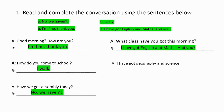I have got geography and science. Since we completed the conversation, let us read. Good morning, good morning. How are you? I'm fine, thank you. How do you come to school? I walked. Have we got assembly today? No, we haven't. What class have you got this morning? I have got English and Maths. And you? I have got geography and science.